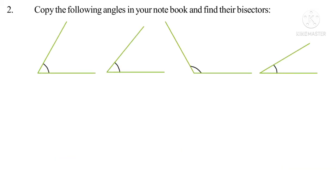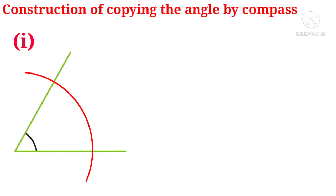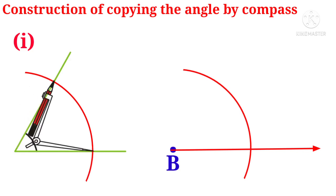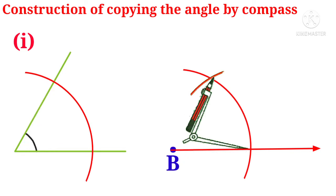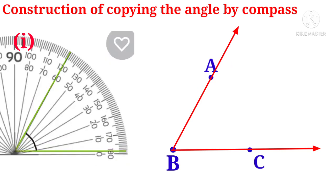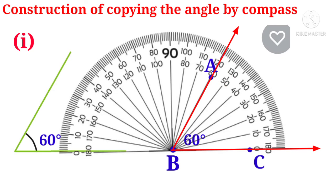Number 2: Copy the following angles in your notebook and find their bisectors. First problem figure: take a compass, put the sharp end at the corner with some radius, and draw an arc. Take a point B and draw a ray through it. With center B and the same radius, draw an arc. Take the length of the arc from the problem figure and with the same radius draw an arc cutting the previous arc. Identify the intersecting points and name them A and C, then join B and A with a ray. Angle ABC is formed. The problem figure shows 60 degrees and the copied angle also shows 60 degrees — correct copied angle is constructed.